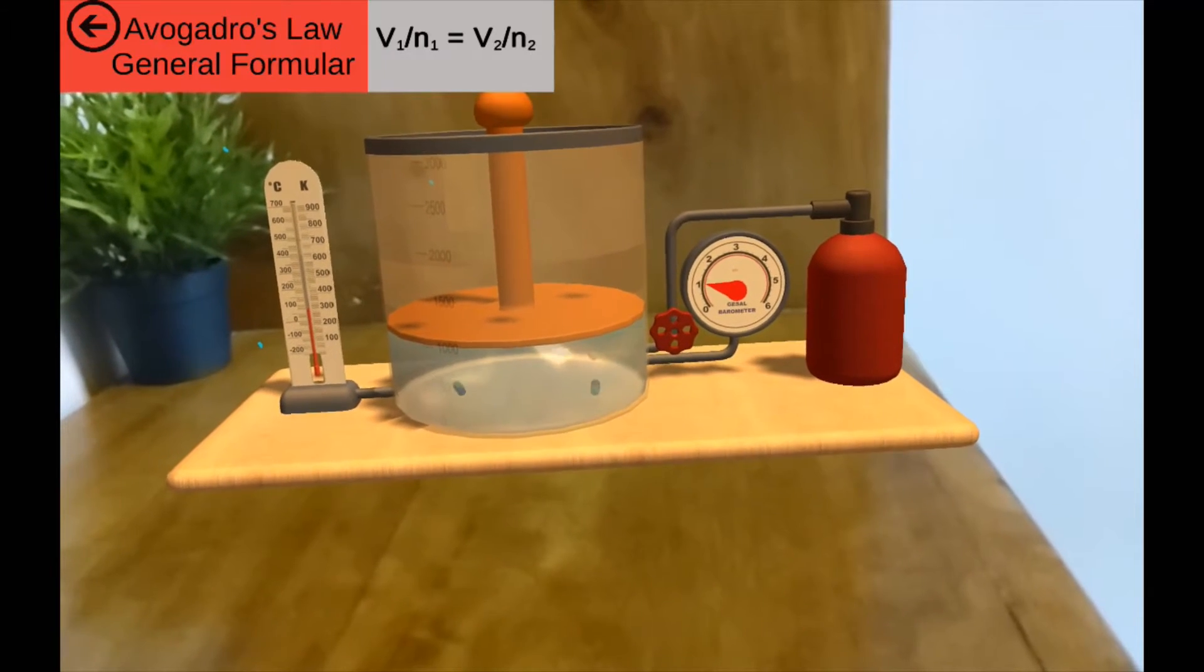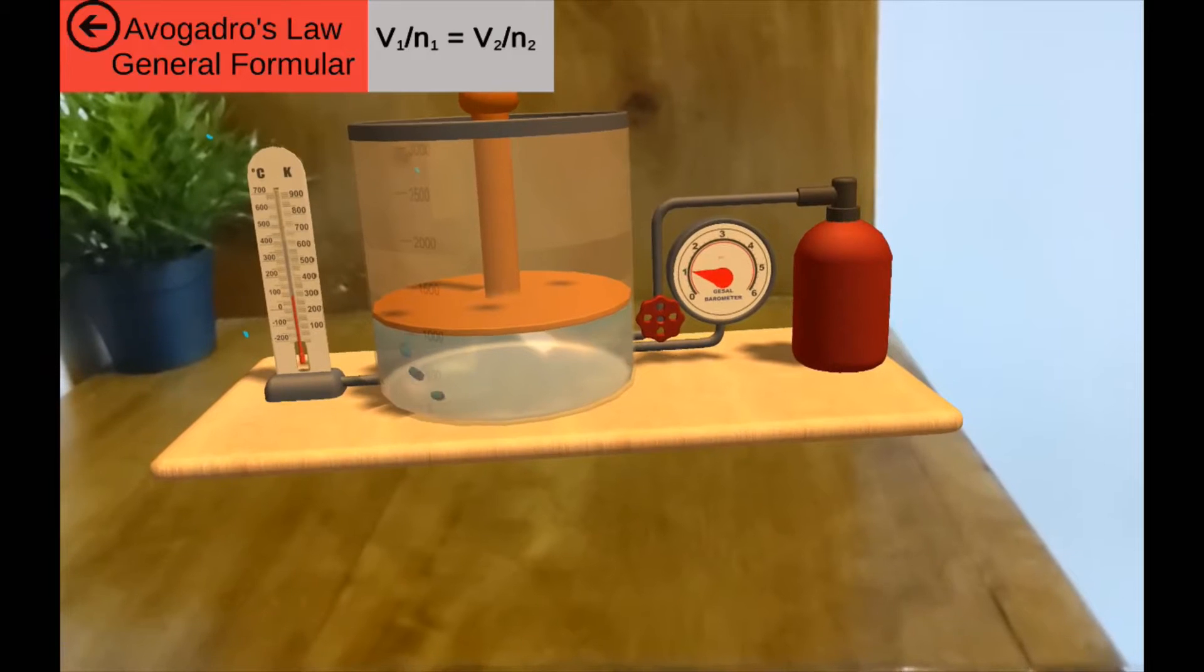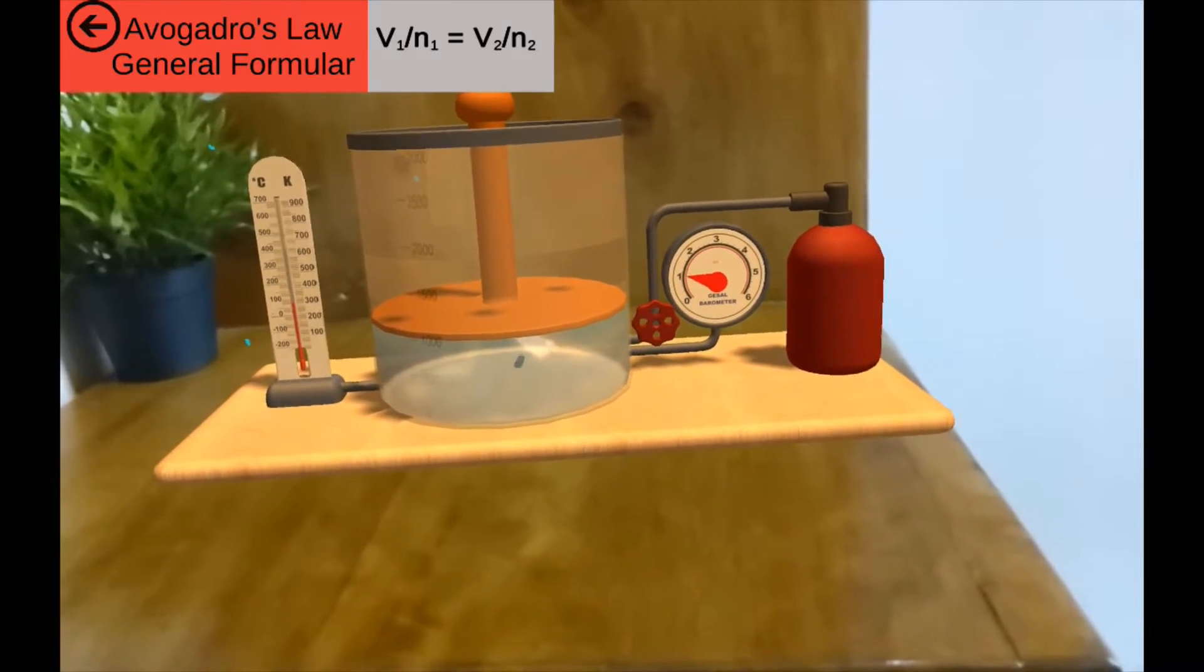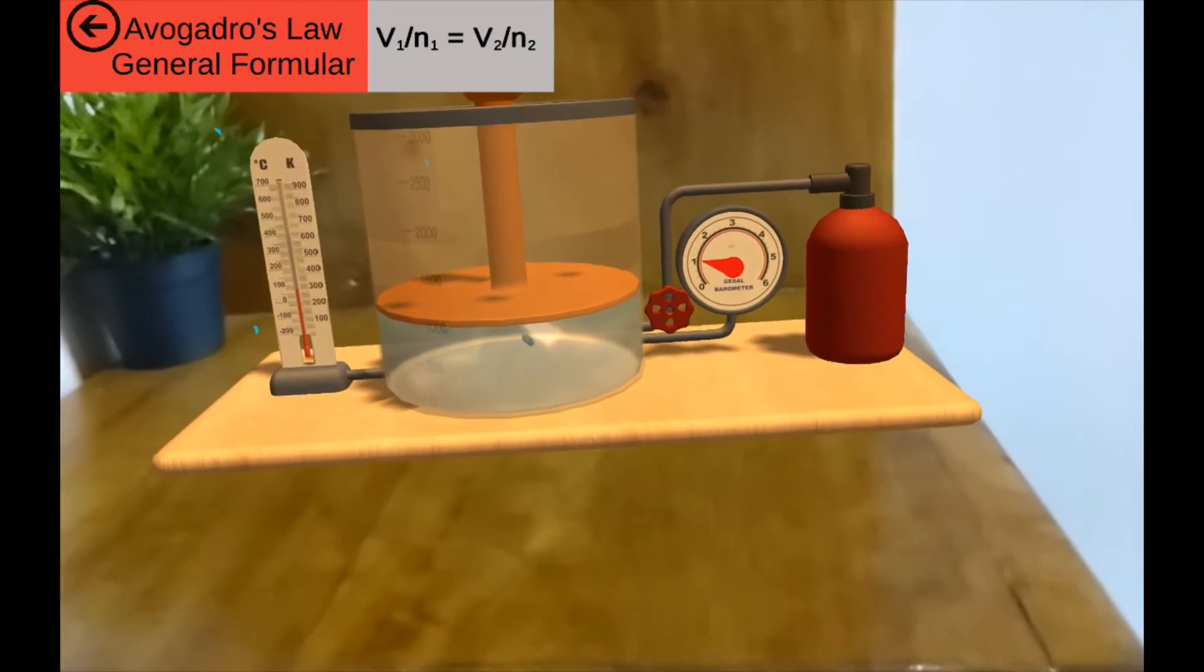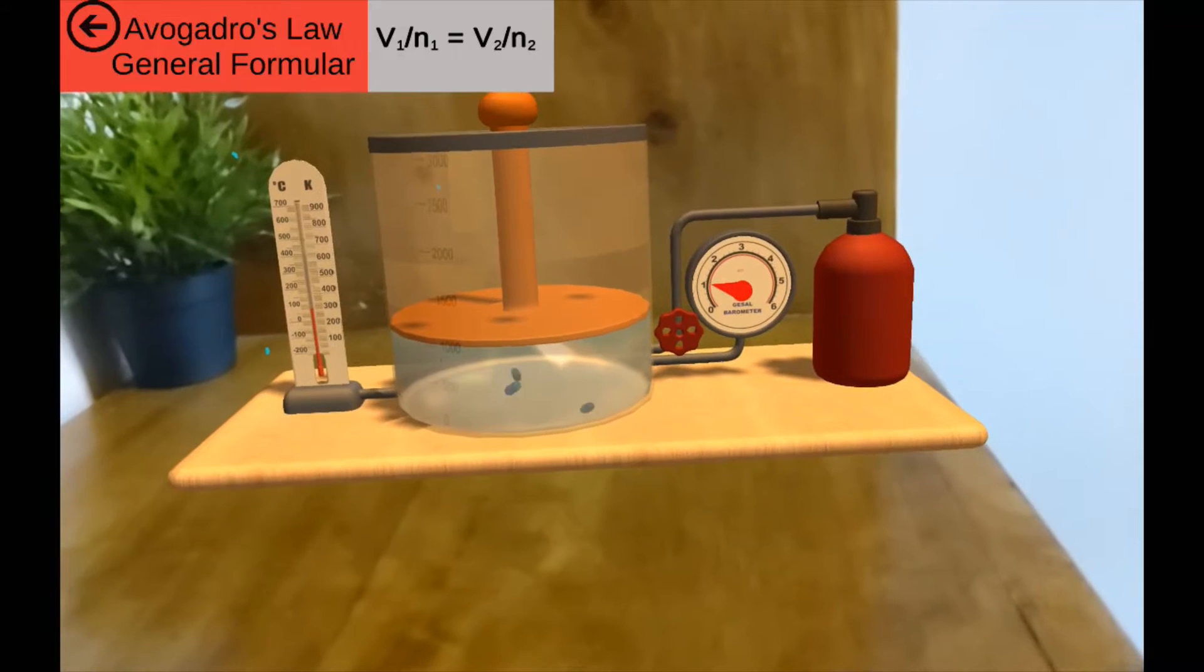For an ideal gas, if the amount of gas in the container is increased, the volume increases. If the amount of gas in the container is decreased, the volume decreases as well. And this will only happen if the pressure and the temperature is kept constant.